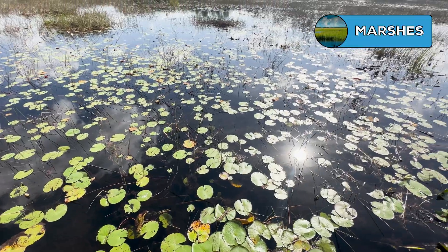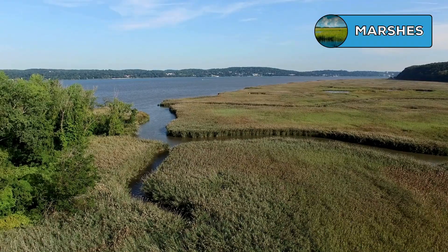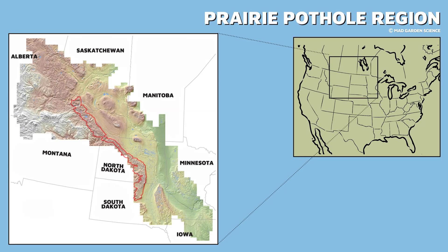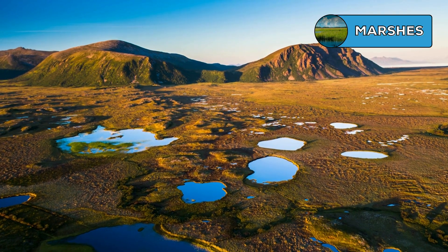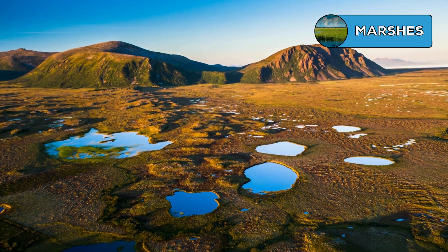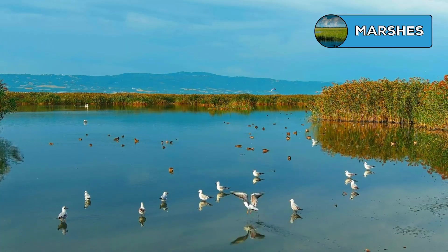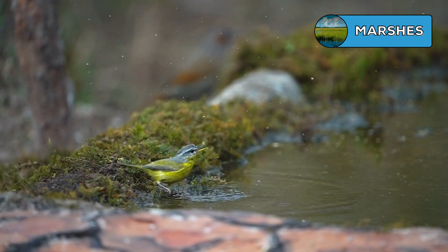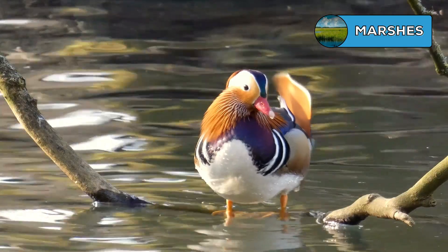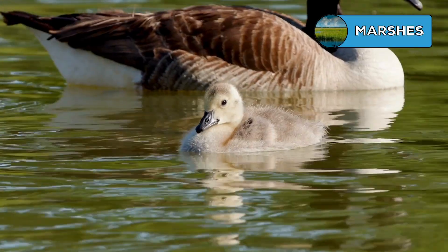Moving north and south of the tropics, these swamps give way to marshes. Marshes form in flat areas along lakes, mouths of rivers, and along coastlines and are dominated by grasses and aquatic plants. Many freshwater marshes lie in the prairie pothole region of North America. Prairie potholes are bowl-shaped depressions filled with water, left by chunks of glacial ice buried in the soil during the most recent ice age. When this ice melted, the muddy water that was left behind filled the potholes. Thousands of migratory birds depend on the remaining prairie potholes as they travel from the arctic to more temperate climates every year, and many species of waterfowl use these wetlands as breeding areas.